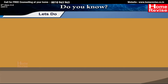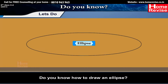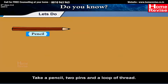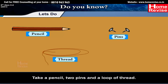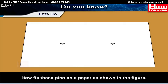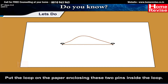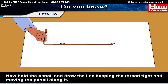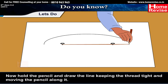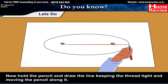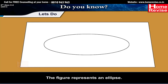Do you know how to draw an ellipse? Take a pencil, two pins, and a loop of thread. Fix these pins on a paper as shown in the figure. Put the loop on the paper enclosing the two pins inside the loop. Now hold the pencil and draw the line, keeping the thread tight and moving the pencil along it. The resulting figure represents an ellipse.